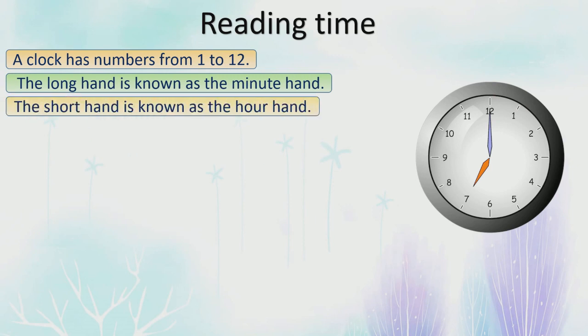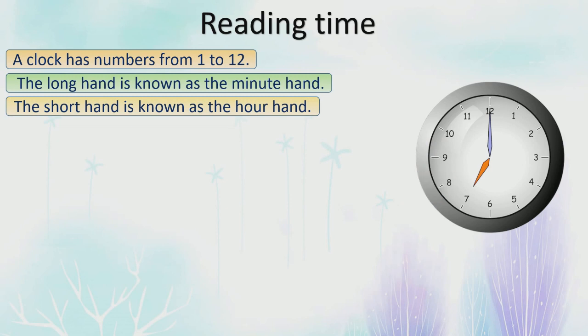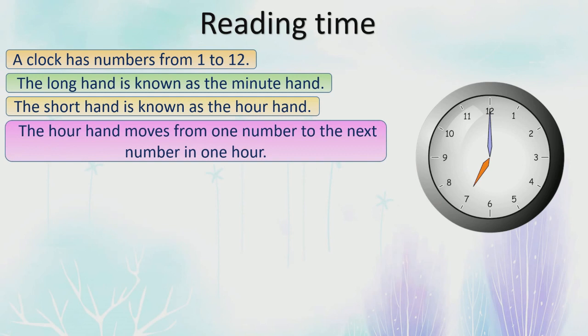The hour hand moves from one number to the next number — for example, it moves from 10 to 11, and then again from 11 to 12. This movement from one number to the next represents one hour.